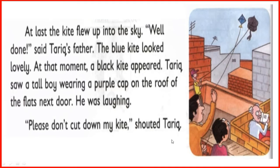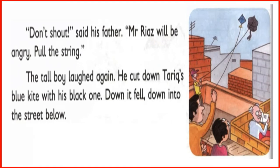That tall boy was flying a black kite, and he was laughing. 'Please don't cut down my kite!' shouted Tariq. Who was flying the black kite? A tall boy wearing a purple cap was flying a black kite. 'Don't shout,' said his father, 'Mr. Riyaz will be angry. Pull the string.' The tall boy laughed and cut down Tariq's blue kite with his black one. Down it fell into the street below.